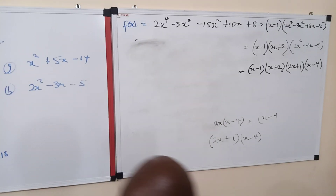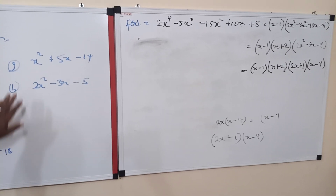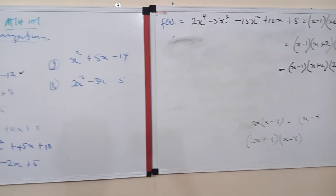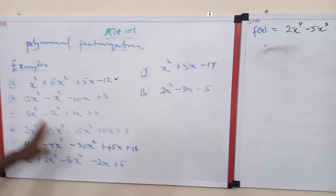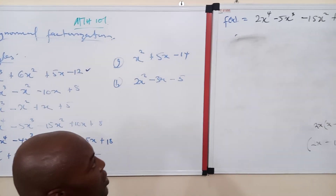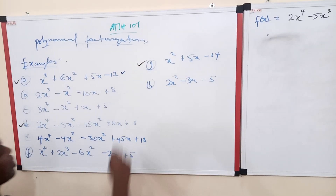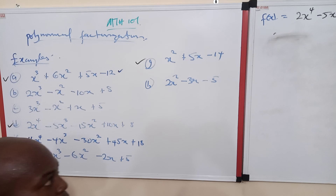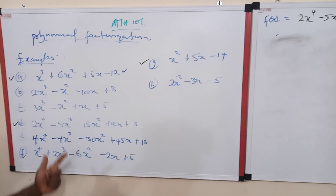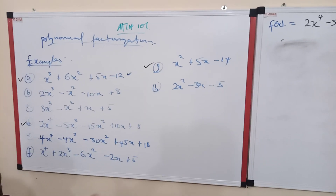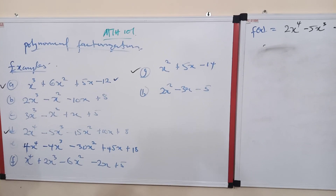We have succeeded in factorizing into 4 simple linear factors. With what we have done, we considered examples using a quadratic expression, a cubic expression, and lastly a quartic expression. All these are polynomials. What we did is to see how we can factor them into simple linear factors. When the order is more than 2, we go through long division to bring it down so that it enables us to factor them.